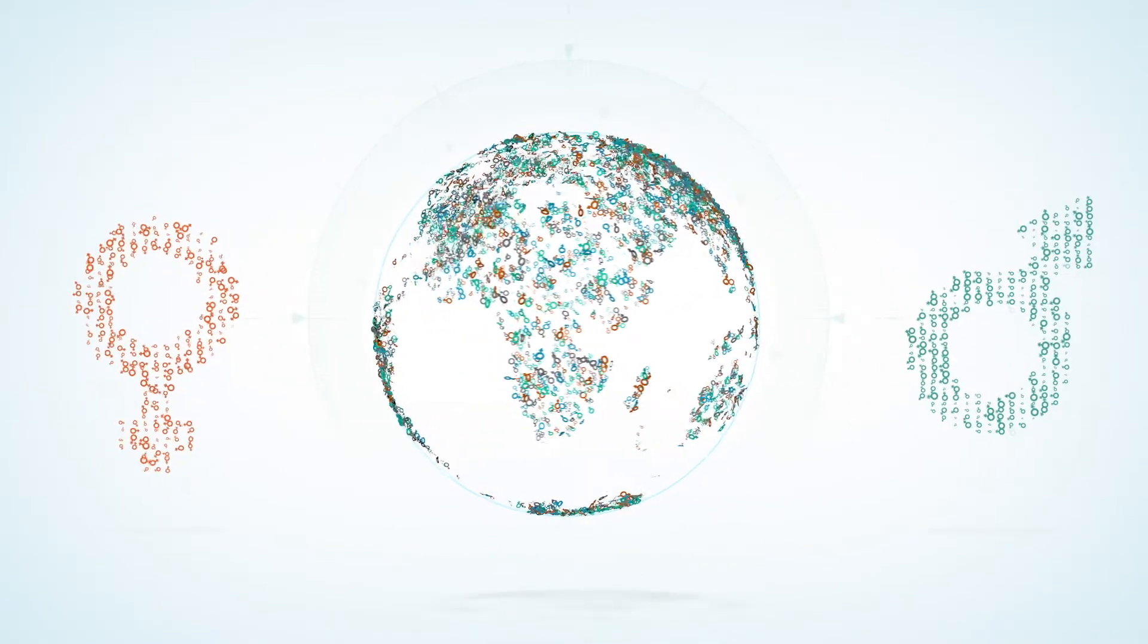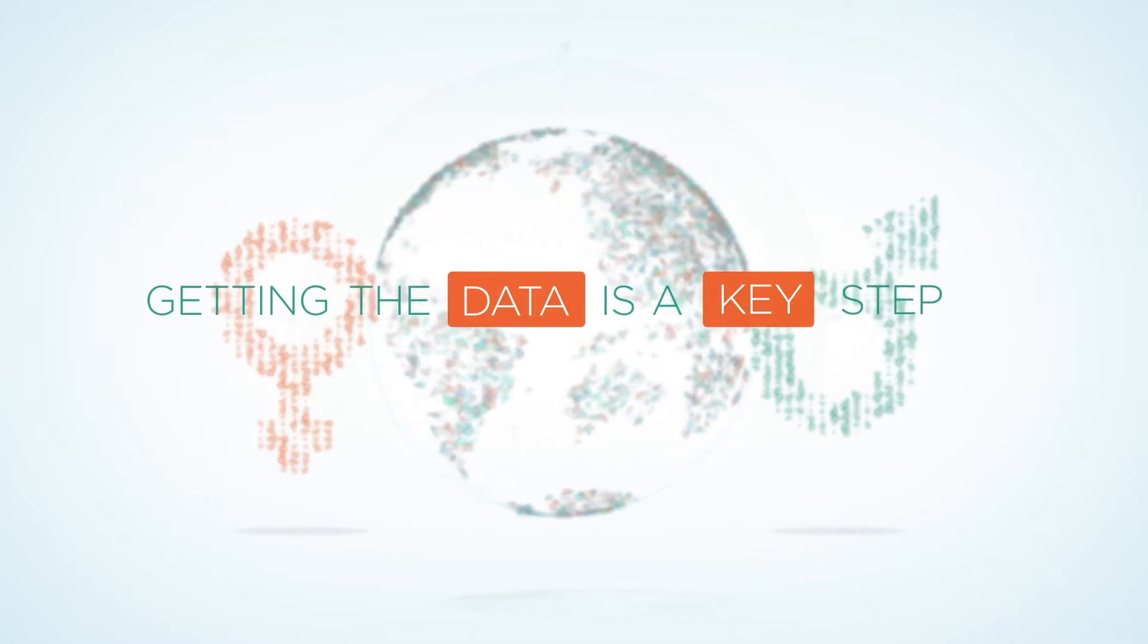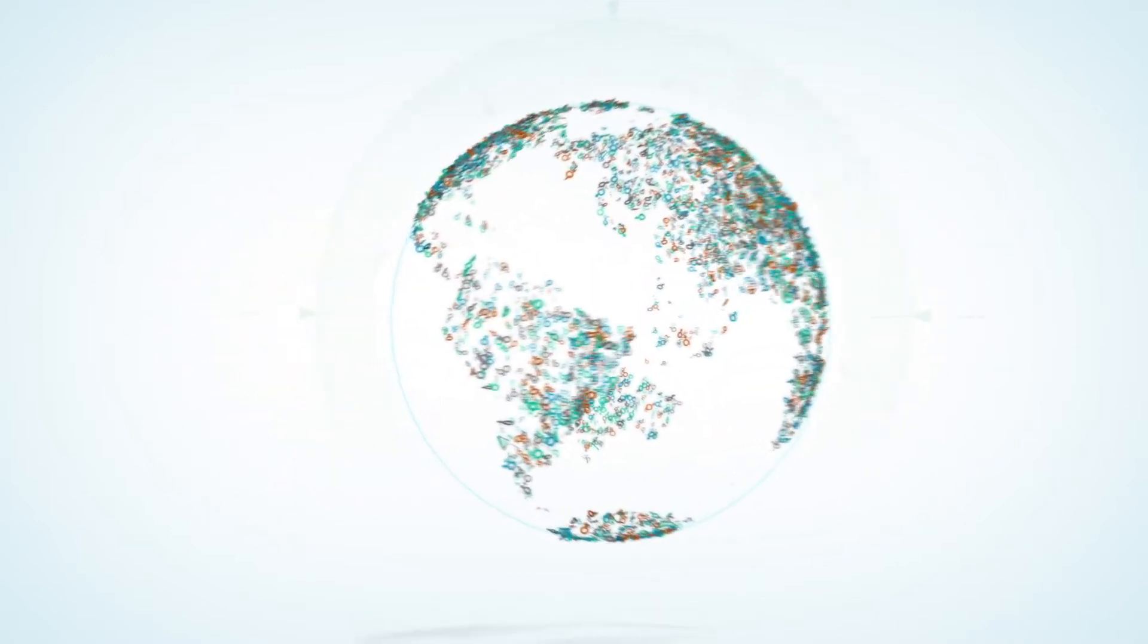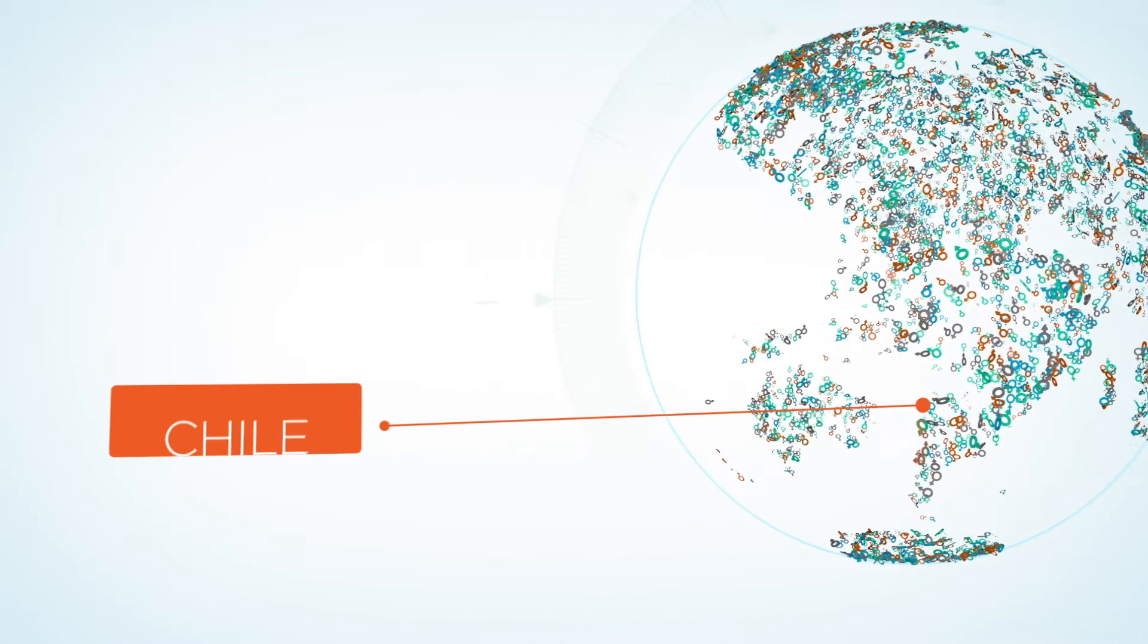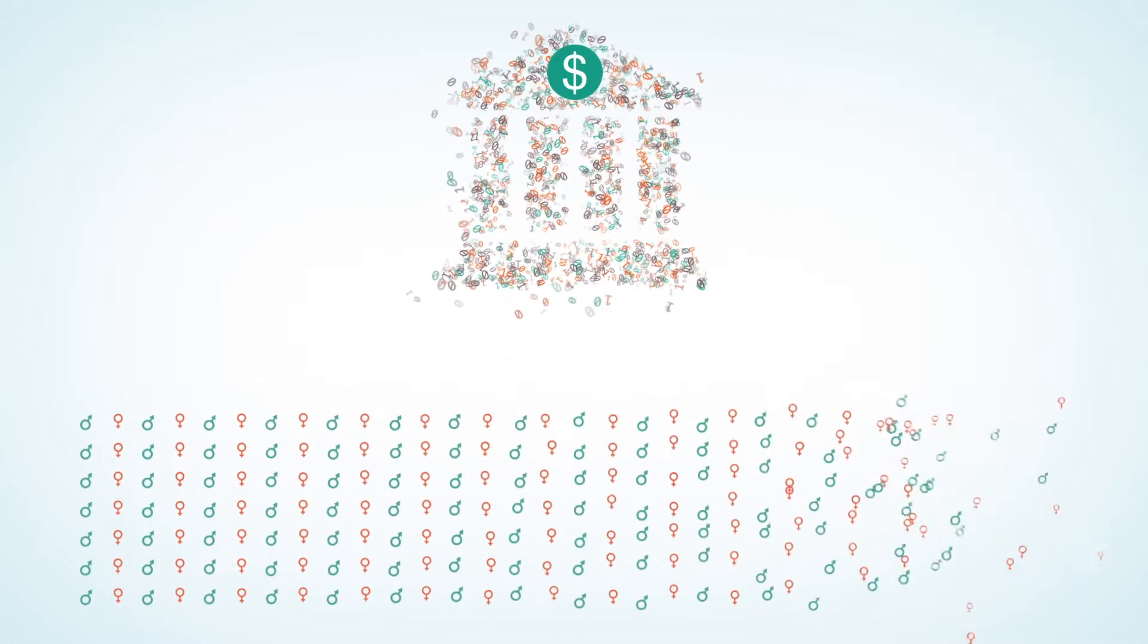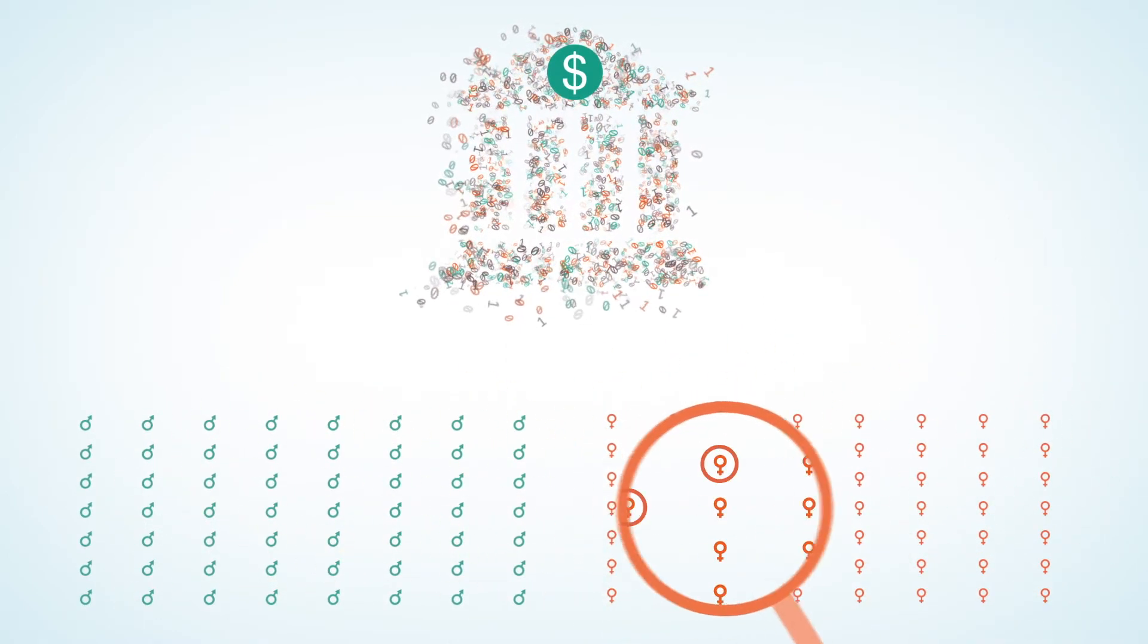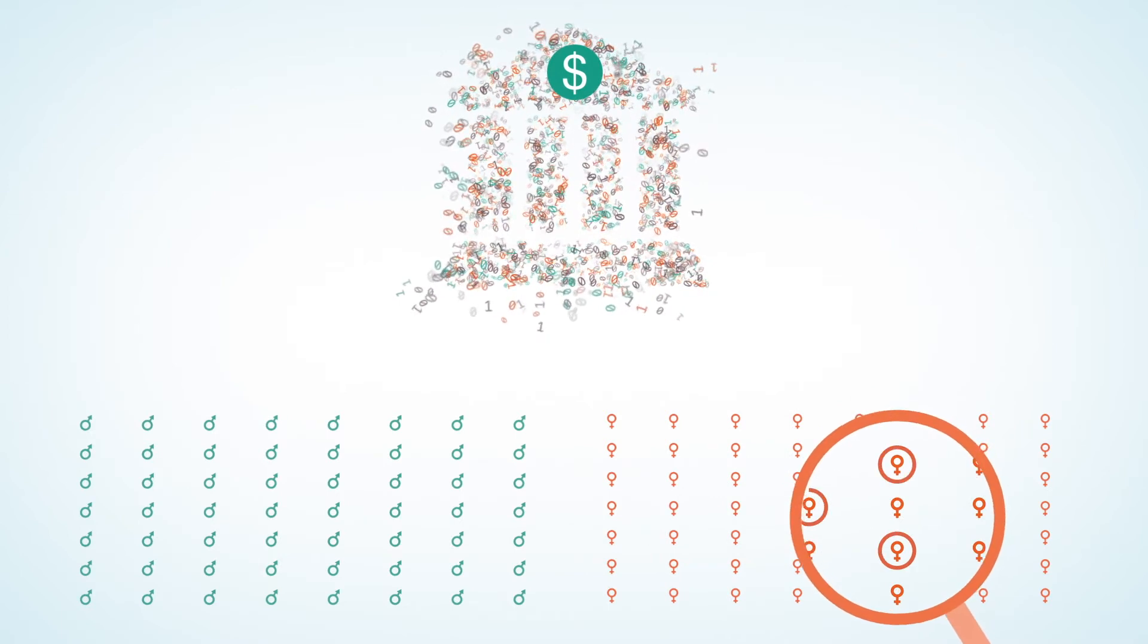Many countries are working on closing the gender gap in financial inclusion, and getting the data is a key step. For example, Chile has collected sex-disaggregated data from banks since 2001. This data has revealed gender differences in access and usage of banking products, making it possible to target women as a distinct customer base.